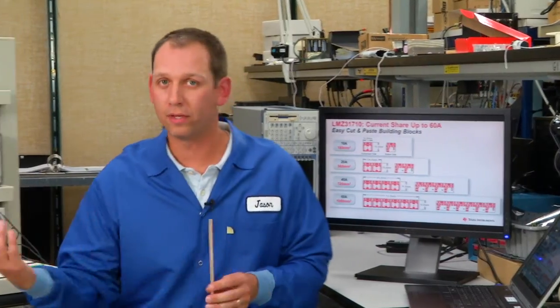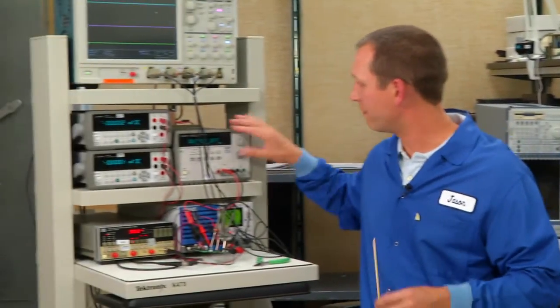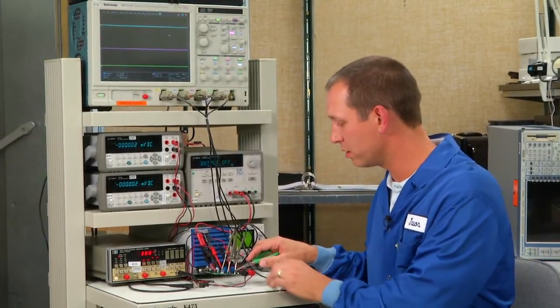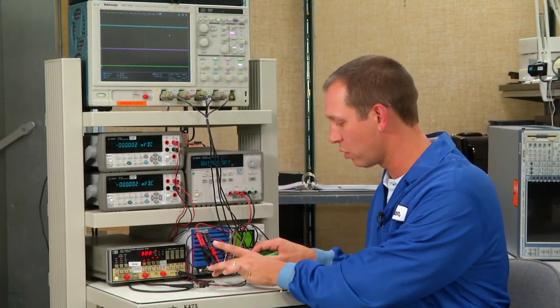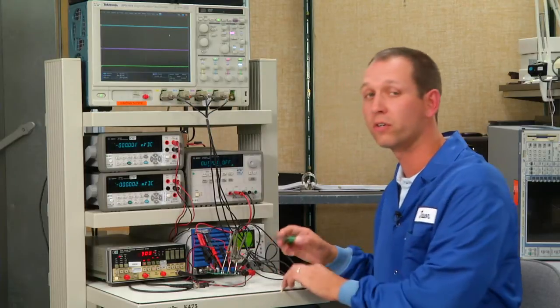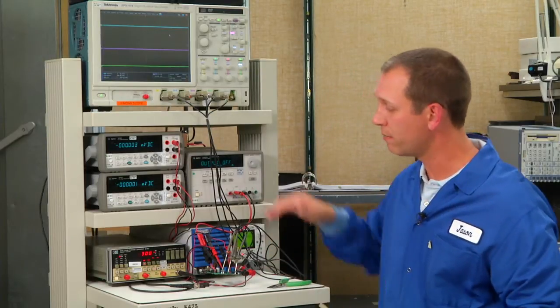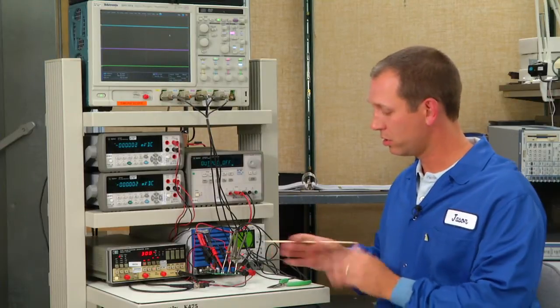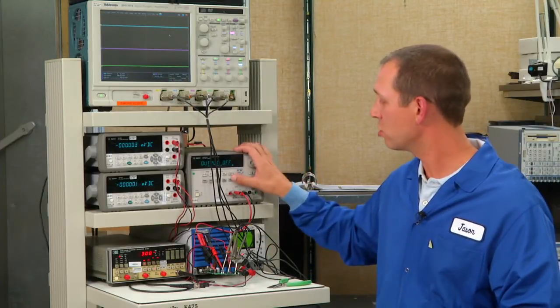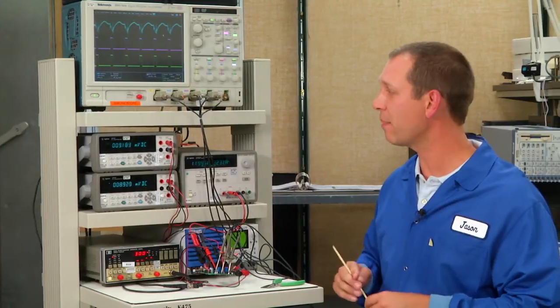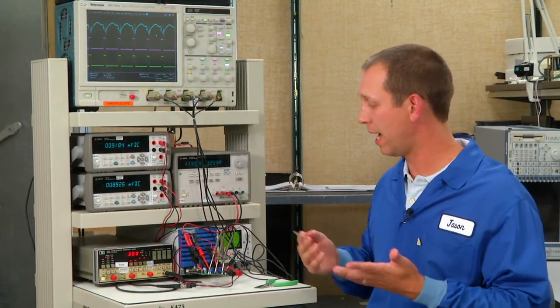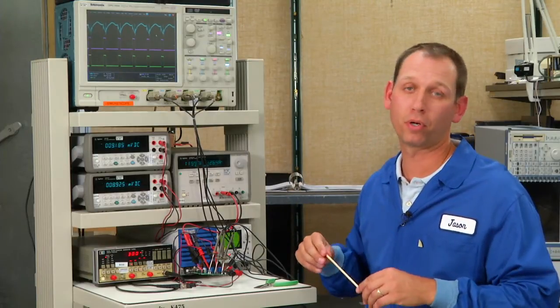Now I'm going to demonstrate the parallel feature on the demo board. I've shut off the device. We still need to synchronize the devices in order to parallel, as it's required that they're at the same frequency. I'm still applying the 300 kilohertz clock to synchronize both of these in phase. In this setup I have 12 volts input, 1.8 volts output, and I'm delivering 18 amps of output current.